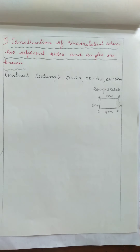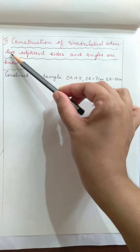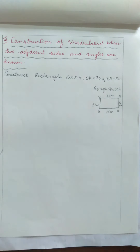Hello children, this is 8th standard maths lesson, practical geometry. In practical geometry, this is the third construction we are going to learn today. The third construction is construction of quadrilateral when two adjacent sides and angles are known.